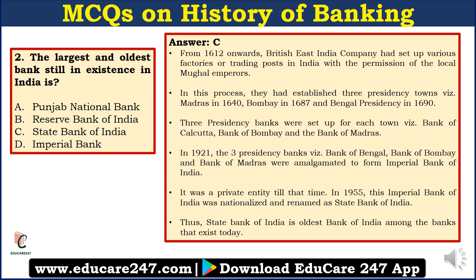Let us look at the history of the State Bank of India. From 1612 onwards, the British East India Company set up various factories or trading posts in India with the permission of local Mughal emperors. In this process, they established three presidency towns: Madras, Bombay, and Bengal. Three presidency banks were set up for each town — the Bank of Calcutta, Bank of Bombay, and Bank of Madras.